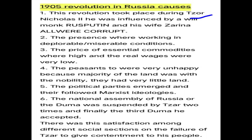During Tsar Nicholas II, the main cause was his wife Zarina and a monk Rasputin, who gave wrong advice. These two people were responsible for a corrupt influence. Tsar Nicholas, Rasputin and Zarina were not able to give a stable government. The condition of the workers was miserable and deplorable.